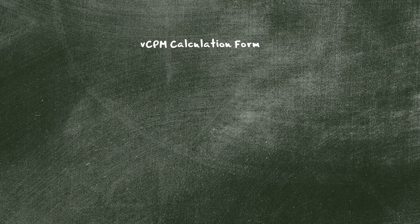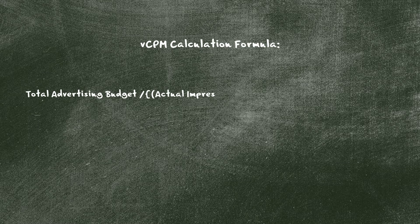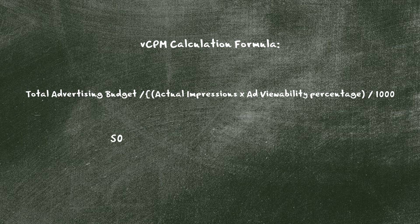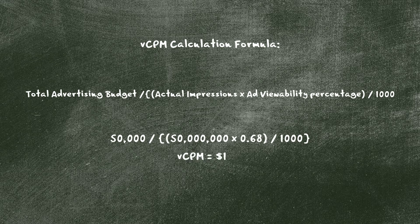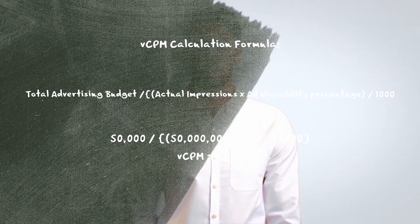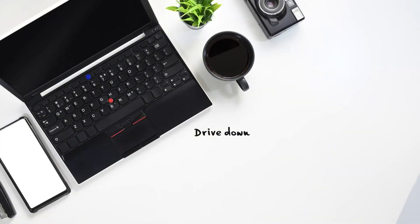To calculate vCPM, you need to know the cost of your ads and the number of viewable impressions. vCPM equals the total advertising budget divided by the actual impressions, times the ad viewability percentage, divided by one thousand. Based on this example: $50,000 divided by 50 million impressions, times the ad viewability of 0.68, divided by 1,000 — so in this case the vCPM is $1.47.